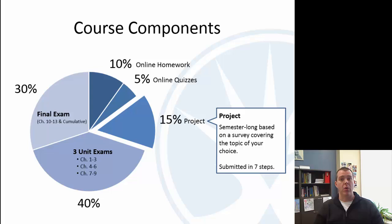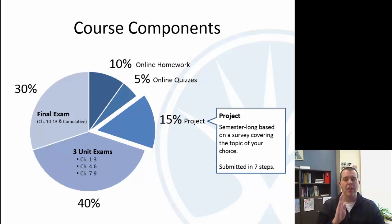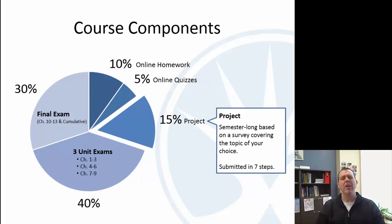A huge part of our course is a semester-long project. It's broken into seven different components, so you're not going to be doing this huge project all at once — you won't be allowed to wait until the end of the semester. You'll have to do different pieces as we go, and that's 15% of your course grade. Essentially it's a survey: you'll write your own survey, do a random sample of people, ask them the questions, compile it, and come up with a report.